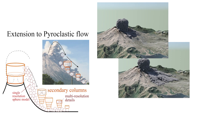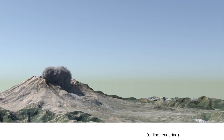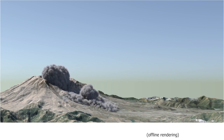Spheres are used to compute the interaction of the flow with the ground, while subcolumns can be generated when the mixture becomes less and less dense due to sedimentation. Here is the result of such a pyroclastic animation rendered offline.